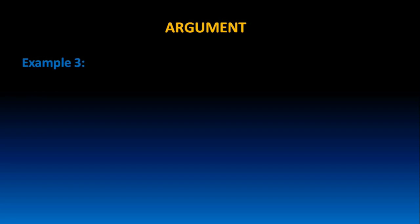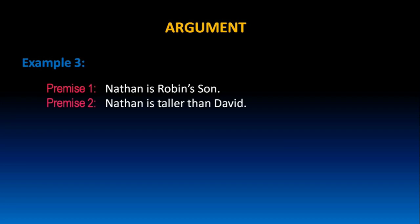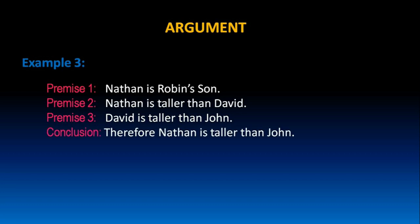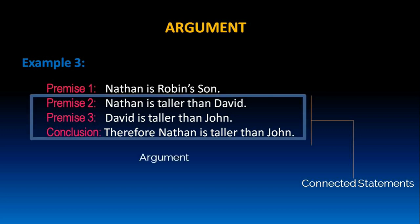Let us take one more example. Nathan is Robin's son. Nathan is taller than David. David is taller than John. Therefore, Nathan is taller than John. In this example, only the last three statements are connected statements, because only premise two and premise three lead to the conclusion that Nathan is taller than John. Whereas premise one does not add any contribution to the conclusion. That is why premise two, premise three, and the conclusion collectively form an argument.